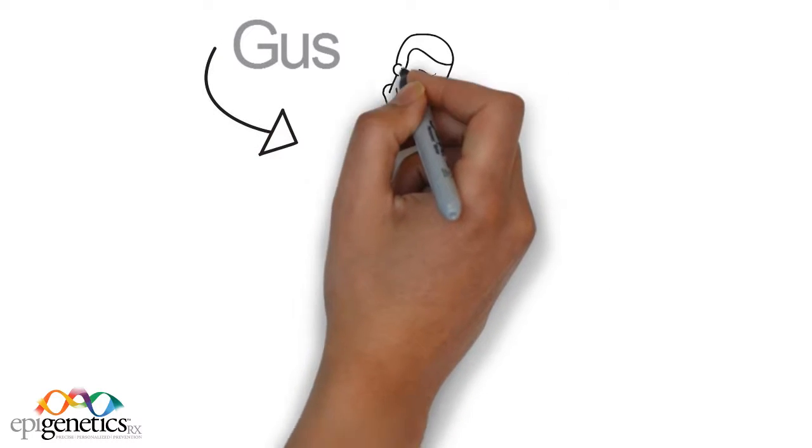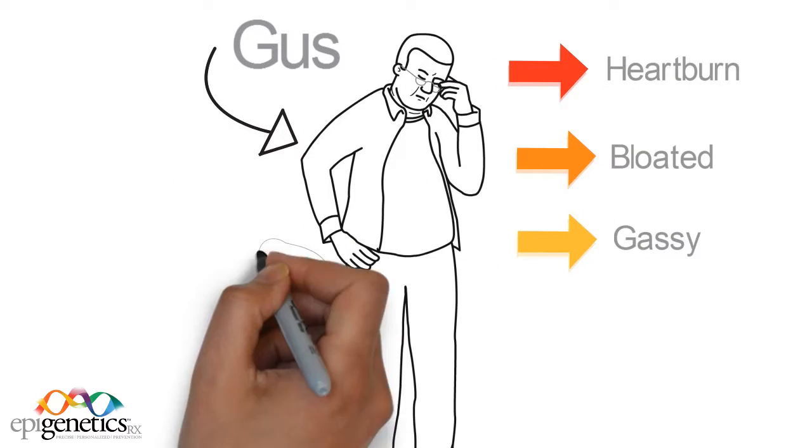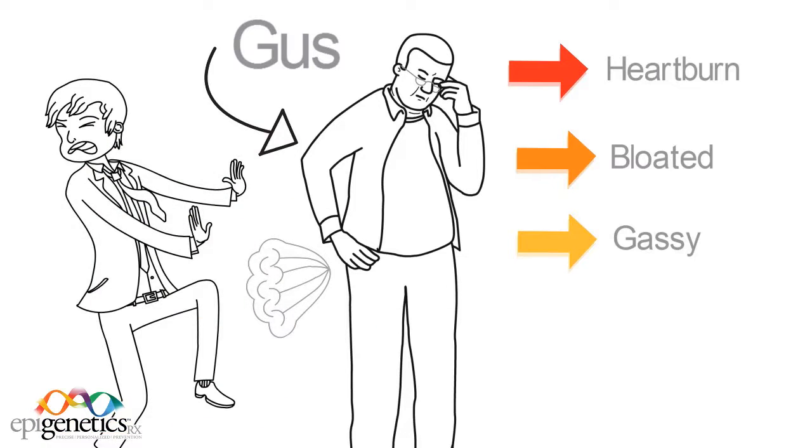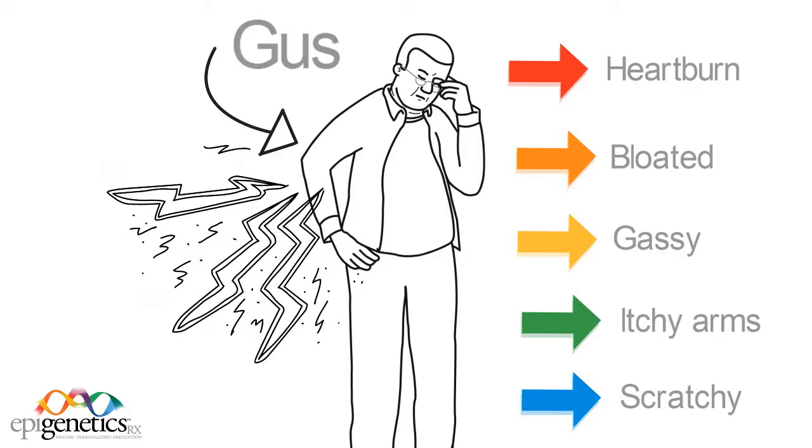Meet 42-year-old Gus. Gus was always feeling gutty, had bad heartburn, felt bloated and gassy, and could easily clear the room. He had itchy arms and couldn't stop scratching. His wife complained of his irritability.